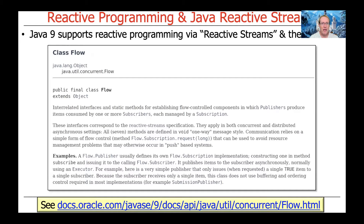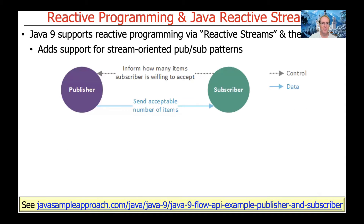Reactive Streams was introduced into Java as part of the Java 9 release, which came out roughly 2016 or so. Java 8 came out in 2014, so it was a couple of years later. They added some new capabilities, and there's something in the Reactive Streams API in Java 9 called the Flow class, which added support for so-called stream-oriented publish-subscribe patterns.